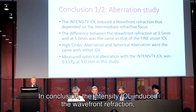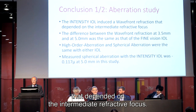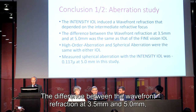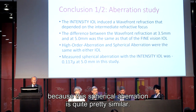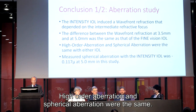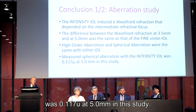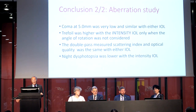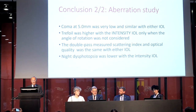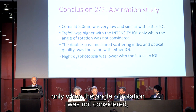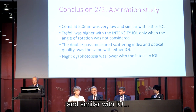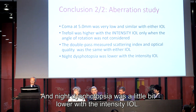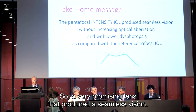In conclusion, the Intensity IOL induced wavefront aberration dependent on the intermediate refractive focus. The difference in aberration between 3.5 and 5 mm was the same as that of the Fine Vision IOL, because the spherical aberration is quite similar. High-order aberration and spherical aberration were the same, and measured spherical aberration with the Intensity IOL was 0.117 at 5 mm in this study. Coma was very low and similar with either IOL. Trefoil was higher with the Intensity only when the angle of rotation was not considered — otherwise it was exactly the same. The double-pass measured scattering index and optical quality were similar with both IOLs, and dysphotopsia was a little bit lower with the Intensity IOL. So, a very promising lens that produced a seamless vision.